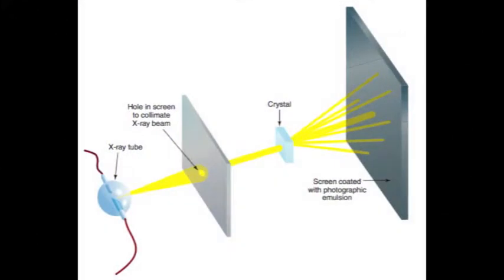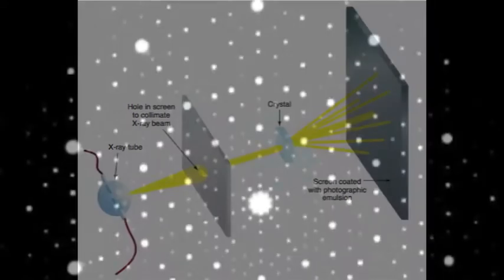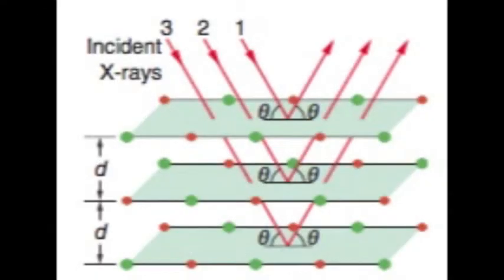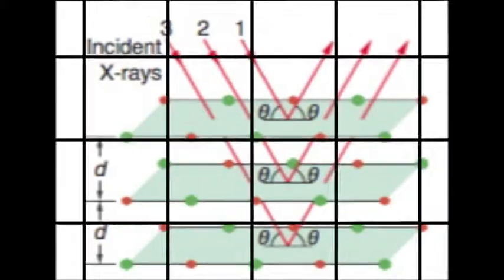His colleagues Walter Friedrich and Paul Knipping tested his idea by bombarding a crystal of zinc sulphide, successfully managing to obtain a diffraction pattern on photographic film. They showed that the interference in the emitted X-rays was caused by some X-rays reflecting from the lower levels or adjacent atomic levels.